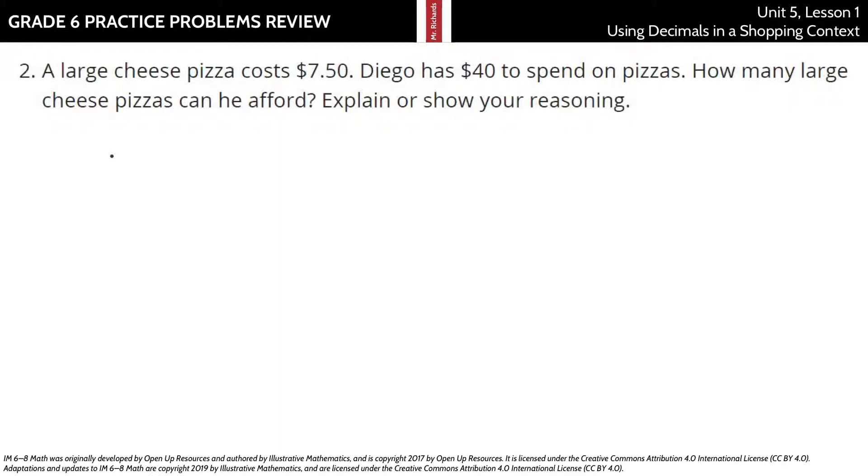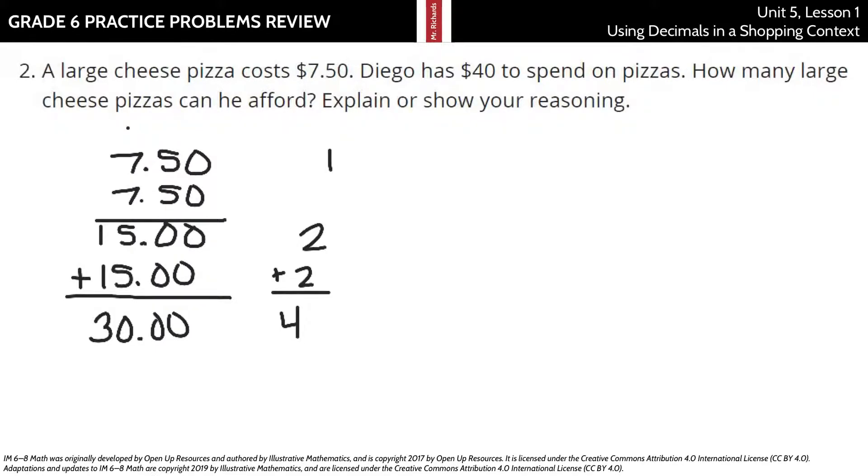And if you started just going, okay, well, $7.50 for one pizza. If I add another $7.50 to that, that's $15 for two pizzas. Now, if I double that, just thinking about it here, that's two more, right? That would leave me at $30 for four pizzas. Getting closer to $40. So if I did $7.50 more, that's adding another pizza, right? That's $37.50 for five pizzas. Well, another $7.50 is going to put me over $40. And so he can get five pizzas. That's one way of doing it.